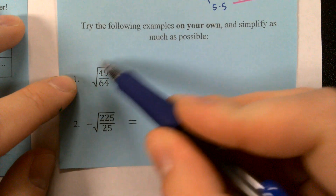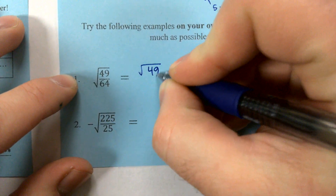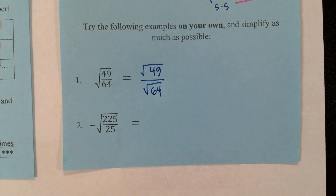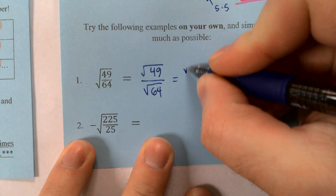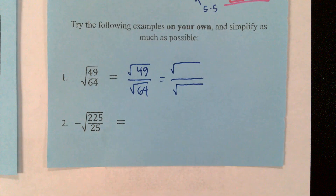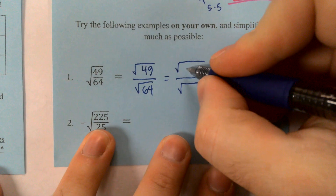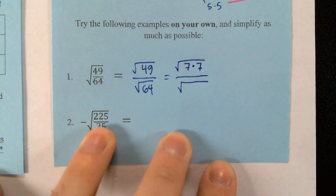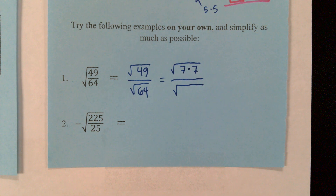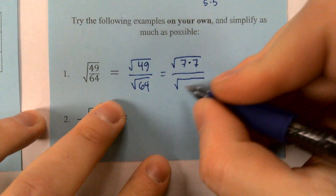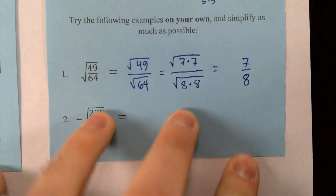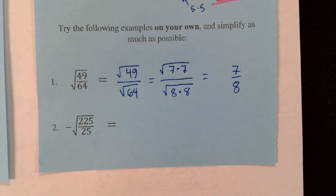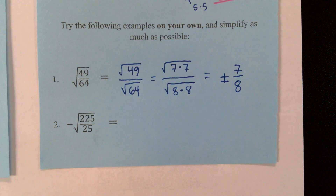We've got this square root with the whole fraction underneath. We break it up into two individual square roots. What two numbers multiply to give me 49? Seven and seven — so 7 times 7 gives us 49. And what two numbers multiply to give me 64? Eight and eight — exactly. So we've got a pair of sevens on top and a pair of eights on the bottom. We bring each of those numbers out, leaving us with 7 over 8, plus or minus. We cannot forget about the plus or minus out in front.